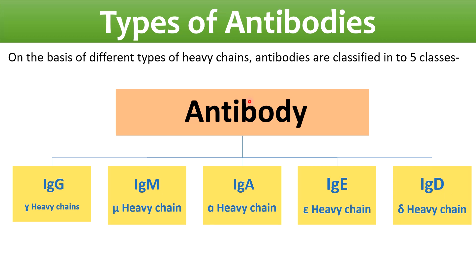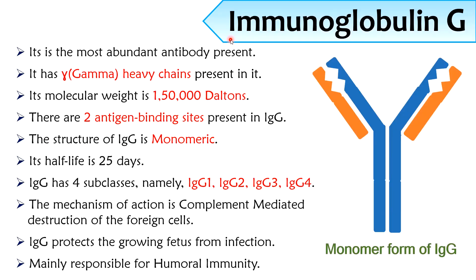Immunoglobulin G: These are the most abundant antibodies present in our body. IgGs have gamma type heavy chains. The molecular weight of IgG is 150,000 Daltons. There are two antigen binding sites present in IgG, and the structure of IgG is monomeric. The half-life of IgG is 25 days. IgGs are classified into four subclasses: IgG1, IgG2, IgG3, and IgG4. The action mechanism of IgG is complement-mediated destruction of foreign cells. Since IgGs are small in size, they can easily cross blood vessels and the placenta, protecting the growing fetus against infection. IgGs are mainly responsible for humoral immunity.